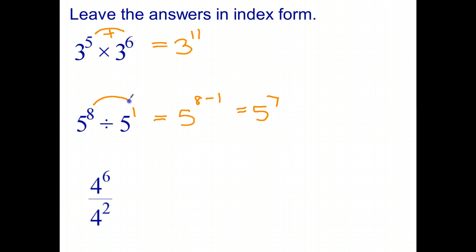So to divide powers with the same base, we subtract indices. Now this fraction down here is just another way of showing division. So 4 to the power of 6 divided by 4 to the power of 2. That's 4 to the power of 6 subtract 2, which is 4 to the power of 4.